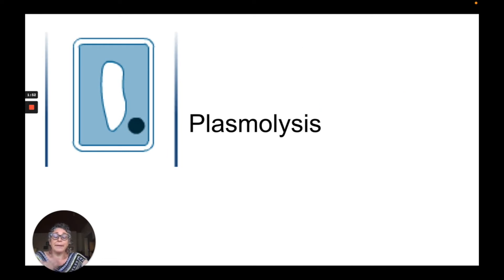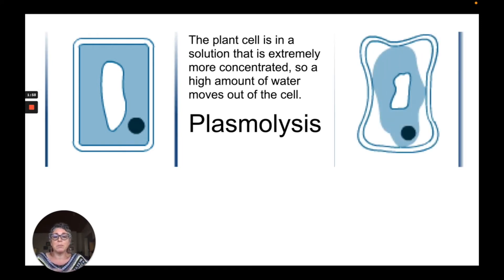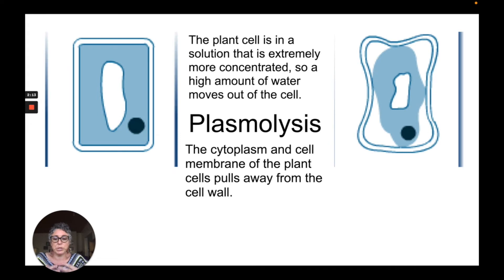Beyond flaccid is something called plasmolysis. This is when the plant cells are in a solution that is extremely more concentrated, so a high amount of water moves out of the cell. As a result, we have a cell that appears quite shrivelled, and the cytoplasm and cell membrane of the plant actually pull away from the cell wall. This can mean cell death, because that is not supposed to happen in a plant cell. We say the cell has undergone plasmolysis.